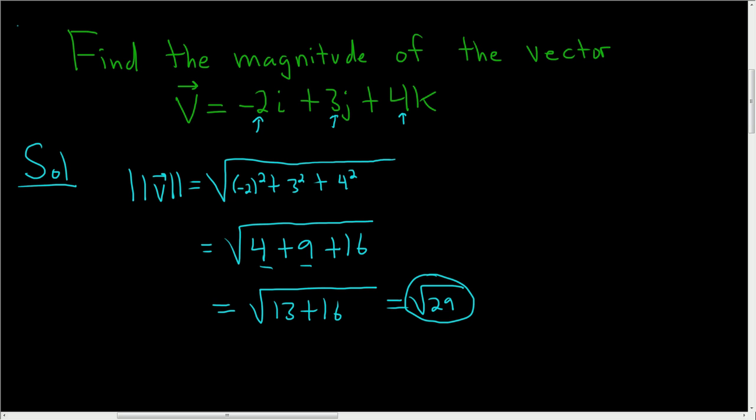You might wonder how I did that so fast, and I didn't even use a formula. Basically, you just square this, add it, square this, add, and then square this.